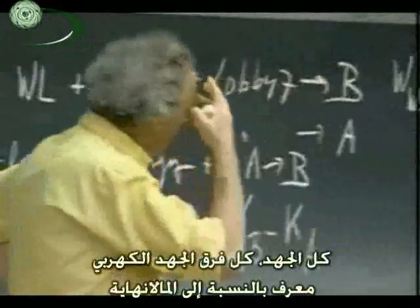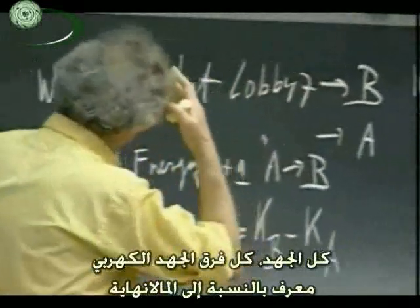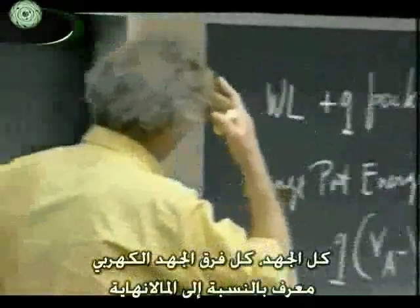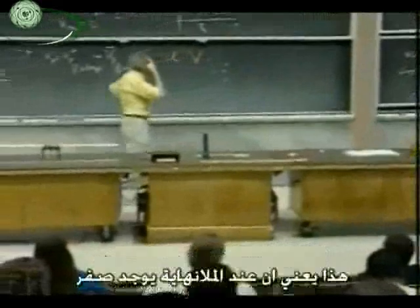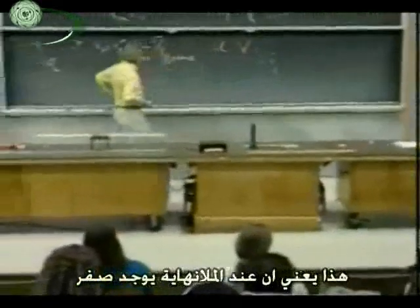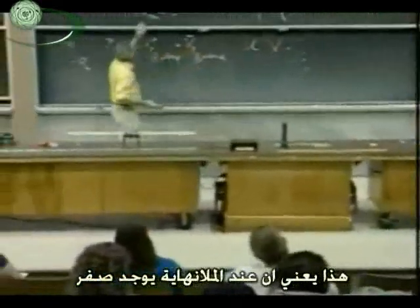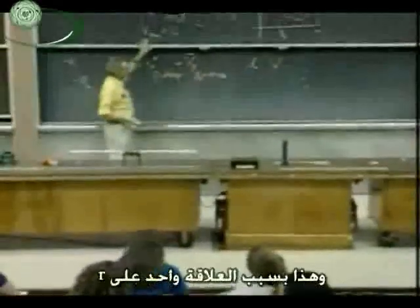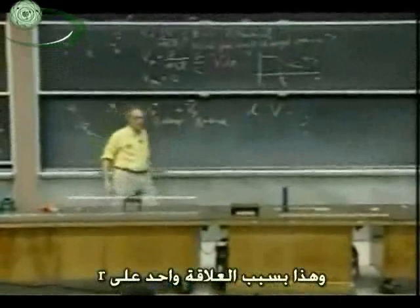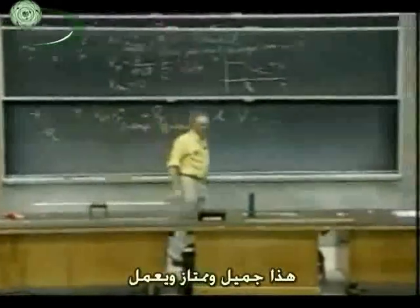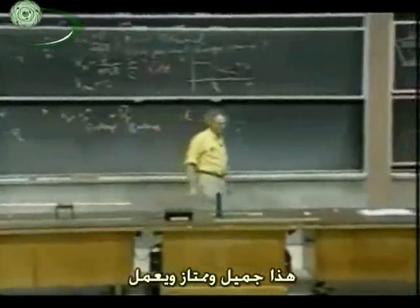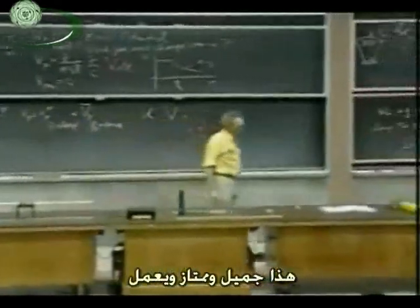All our electric potentials are defined relative to infinity. That means at infinity they are zero. That is because of the one-over-R relationship. That's very nice and it works.